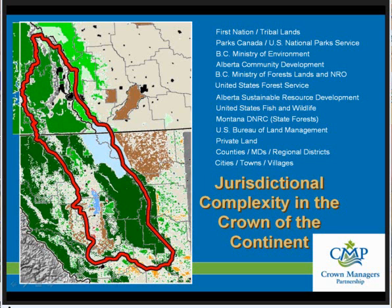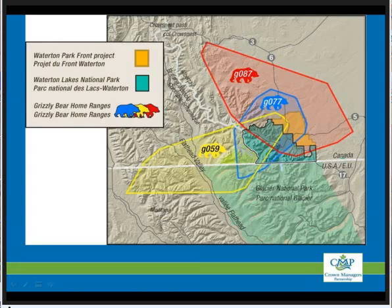We have many iconic species within the Crown of the Continent Ecosystem, one of which is the grizzly bear. Many species that live within the region do not recognize jurisdictional boundaries and move freely around the landscape. Grizzly bears in southwest Alberta have a different management regime than in southeast British Columbia versus Glacier National Park or the National Forests of Montana.